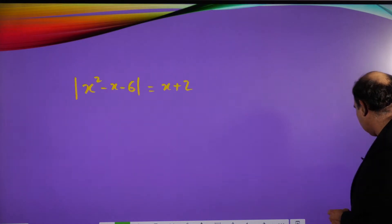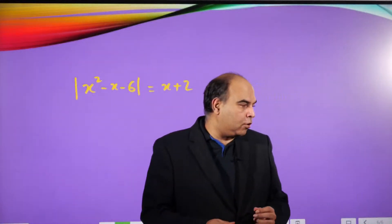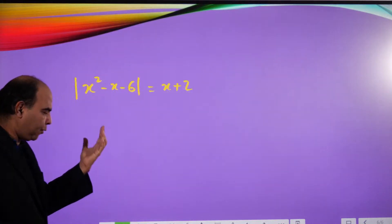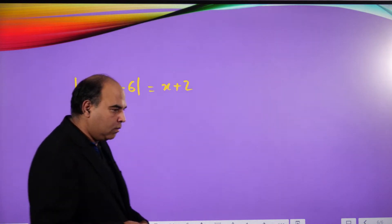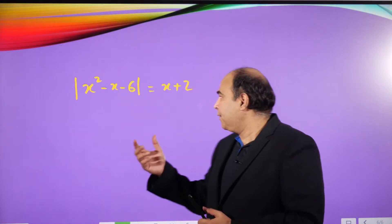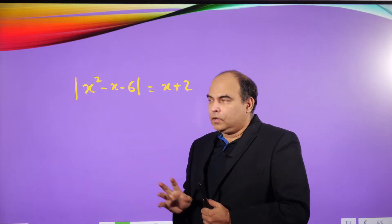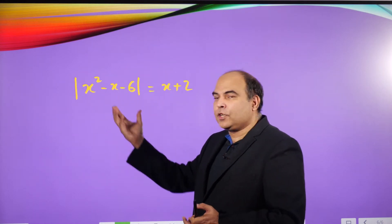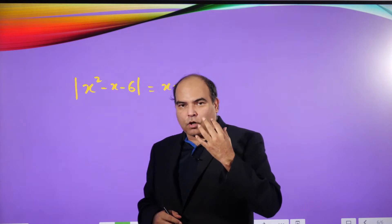So the starting point in this question is to open the modulus. The basic principle: if inside the modulus you've got a positive value or zero, then the modulus just disappears and the expression comes as it is. This is a three to four step question, and if you can execute those steps correctly, you get the three marks in the exam.